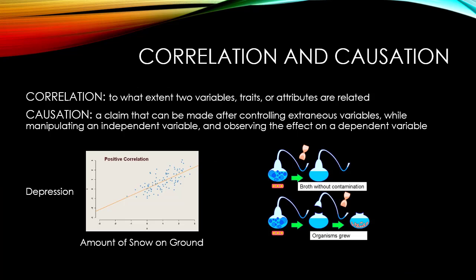Let's first define correlation versus causation. Correlation is essentially to what extent two variables, traits, or attributes are related. For example, if you look at the graph on the lower left-hand side, you will see that we are looking at a positive correlation between depression and the amount of snow on the ground.